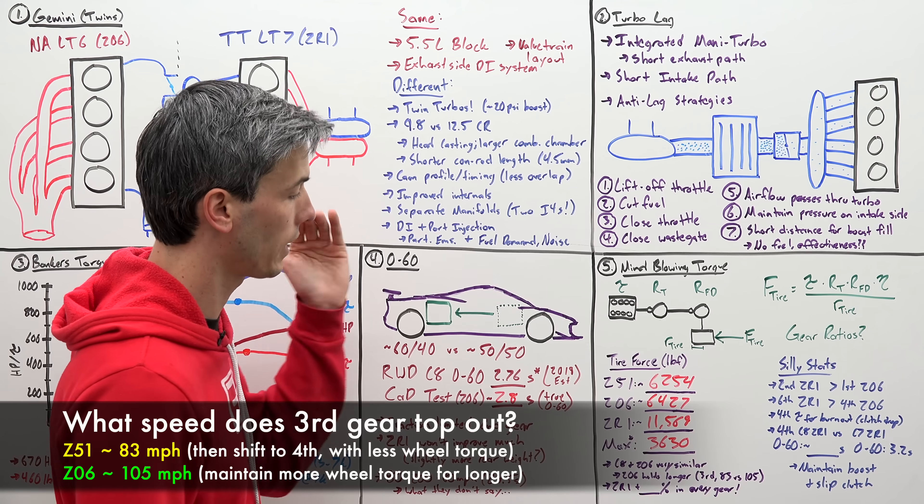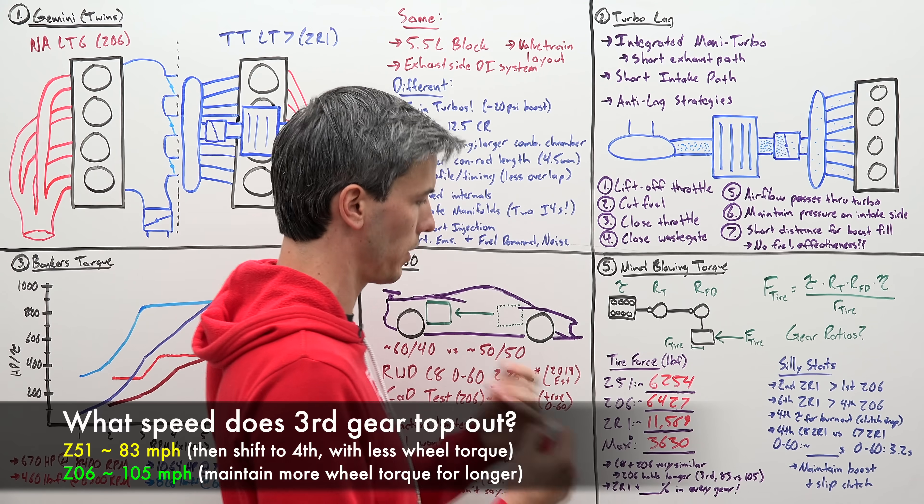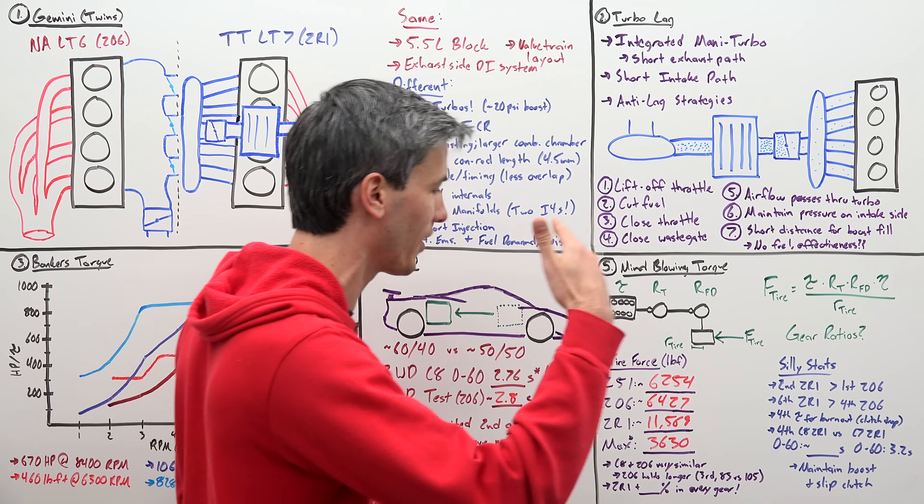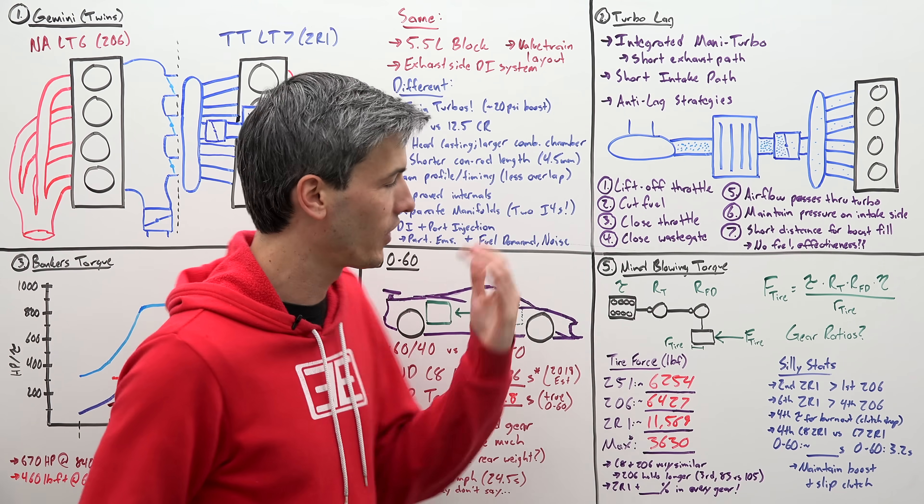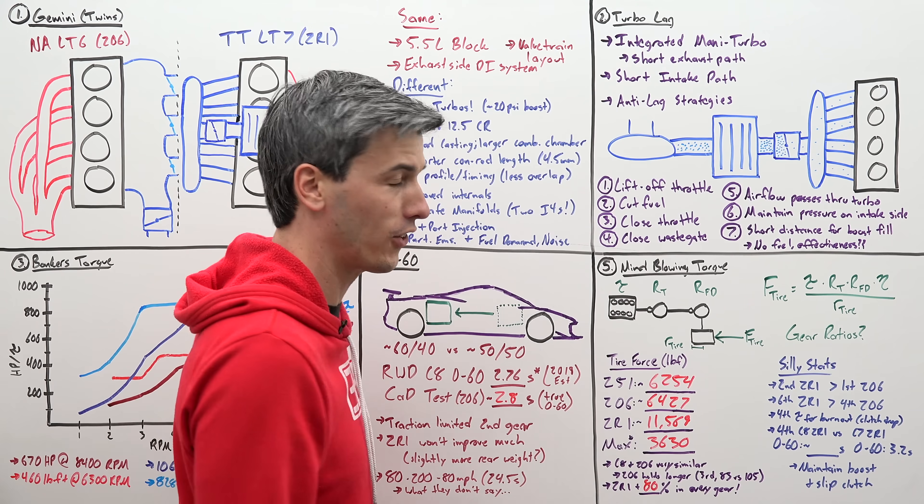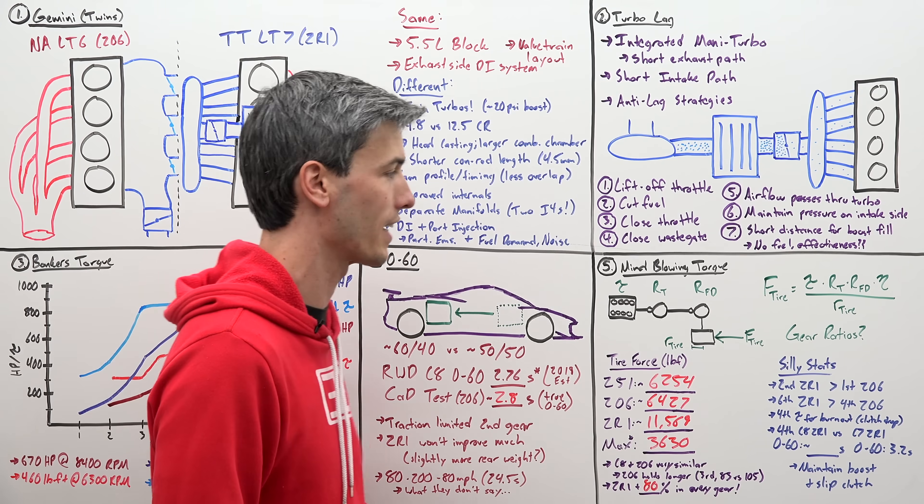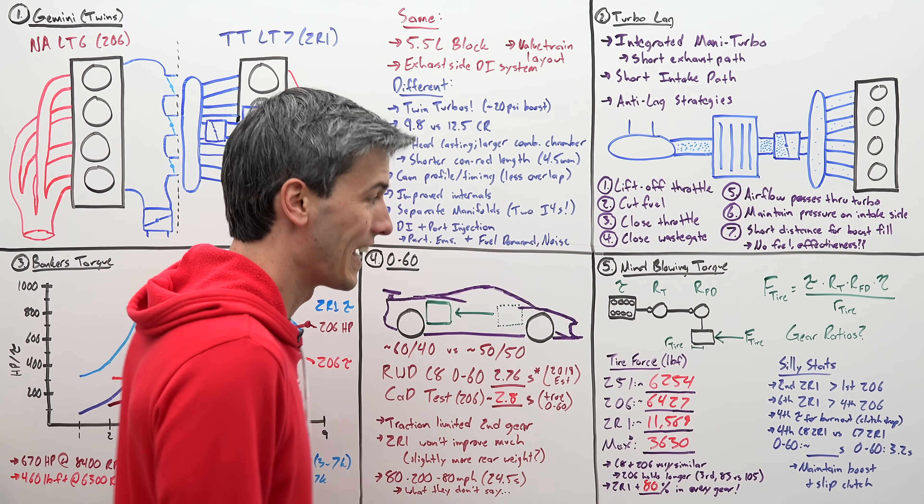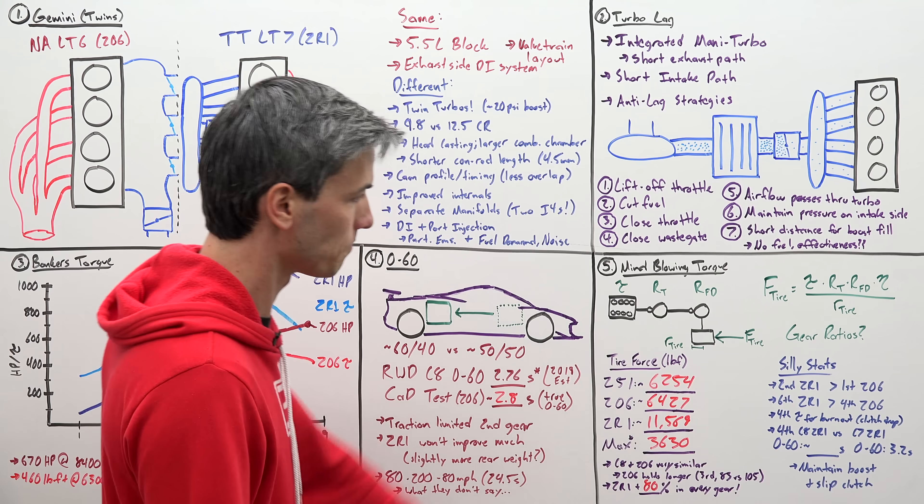Now, as far as the Z06 holding on to gears for longer, if you're in third gear in the standard C8 Z51, you'll accelerate in third gear up to about 83 miles per hour. In the Z06, you'll have slightly more acceleration that'll be pushing you a little bit more into your seat, but you'll hold on to it much longer—in third gear up to 105 miles per hour. So that's why it is a significantly faster car. Again, power playing a role here. Now in the ZR1, any gear you're in versus the Z06, you get an 80% boost in how much that force is pressing you against the seat, assuming you have the traction to put it down. Absolutely absurd. So some silly stats of the ZR1 versus the Z06: in second gear, the ZR1 has more wheel torque than in first gear in the Z06. In sixth gear in the ZR1, you have a greater force at the tire than you have in fourth gear in the Z06.